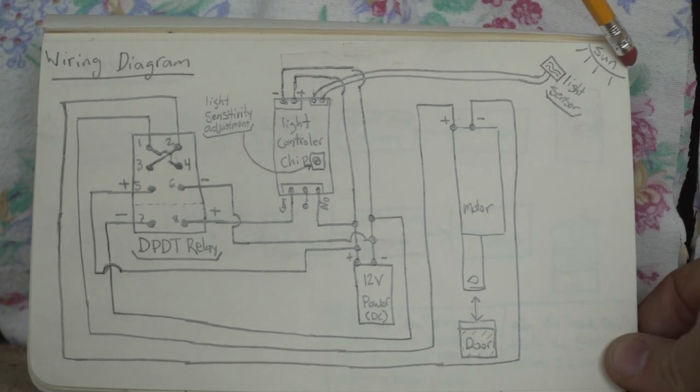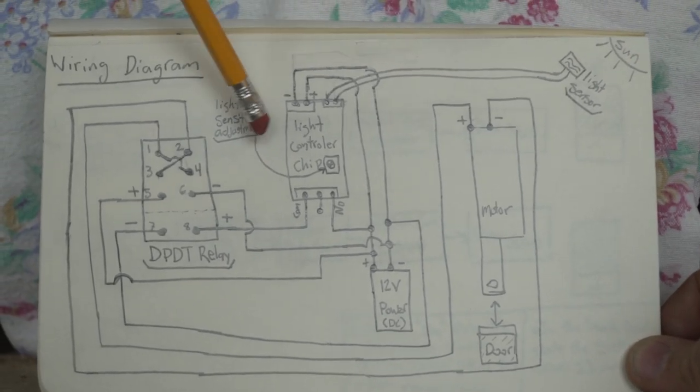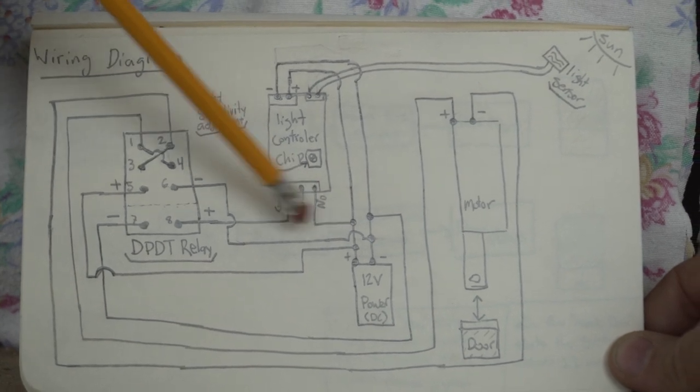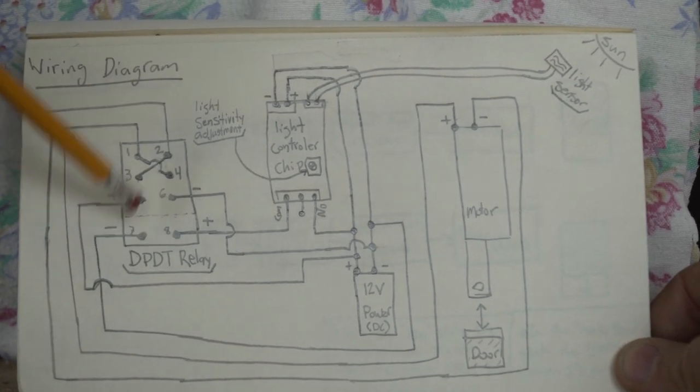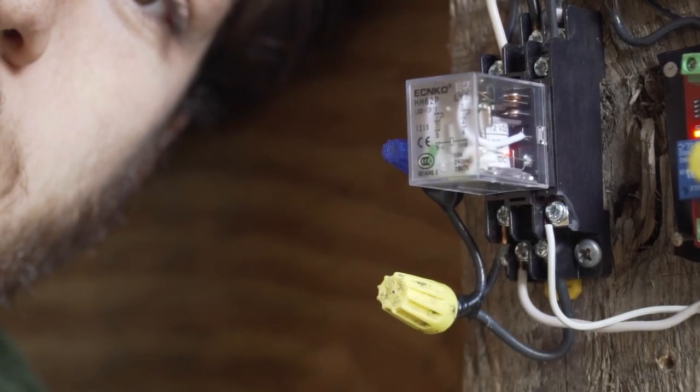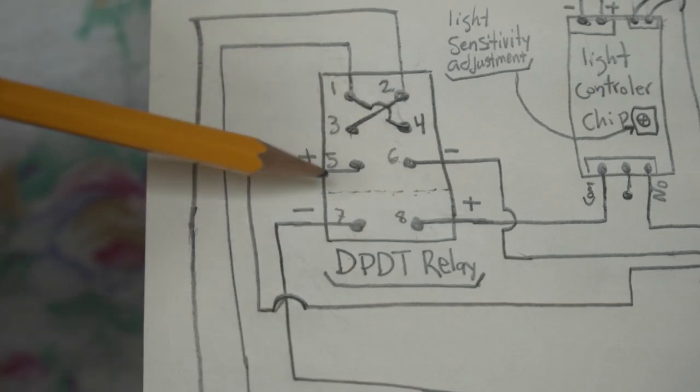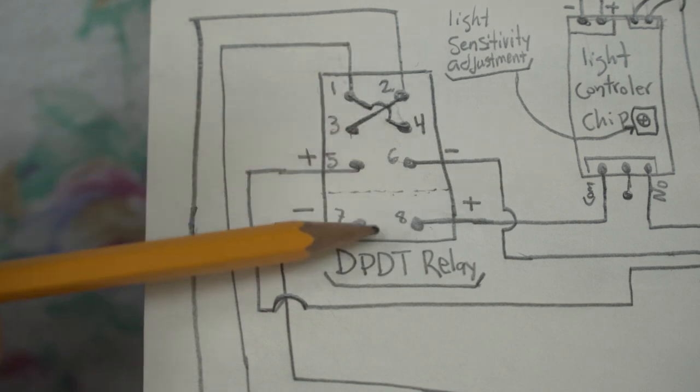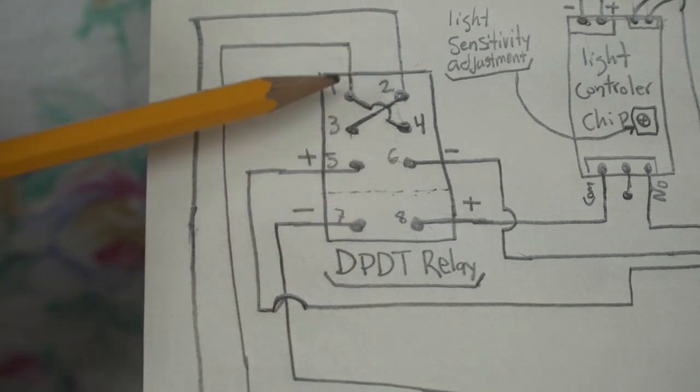The way this system works is that the sun causes the light sensor to turn a switch on and off inside the controller system. That provides power on and off to the dual-pull, dual-throw relay. Dual-pull, dual-throw relays have eight pins on them. The way this has been wired will cause the motor to switch directions because the polarity will change.